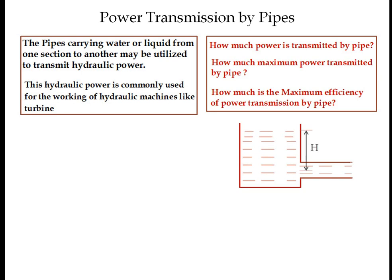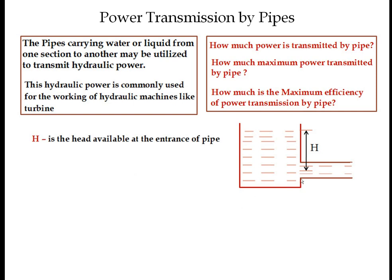Consider a reservoir with one pipe connected to it. H is the head available at the entrance of the pipe. When fluid flows from the entrance to the exit of the pipe, some head loss takes place due to friction between the fluid particles and the pipe wall. That head loss is denoted as HF, which is the head loss due to friction.